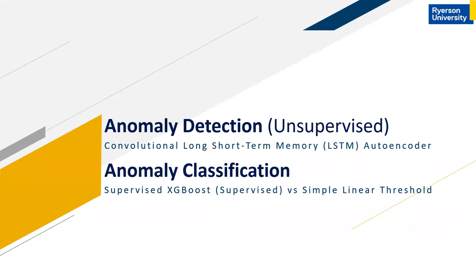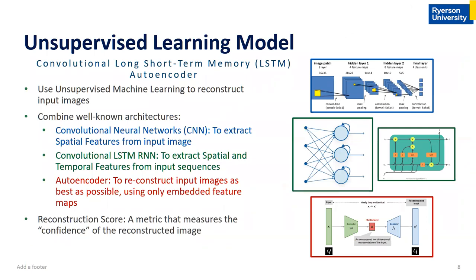The two models we examined: the main one is an unsupervised anomaly detection model — a convolutional long short-term memory autoencoder — and the other is a classification model. We used CNNs to extract spatial features and convolutional LSTMs to extract spatial and temporal features within our video sequences. The autoencoder architecture takes a video as input, attempts to reproduce it, and we measure performance using a reconstruction score.